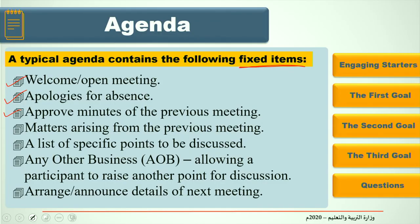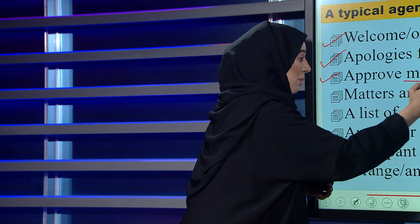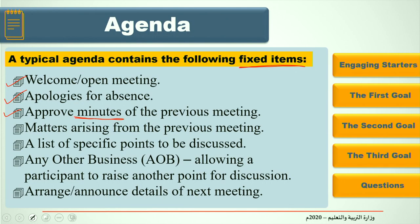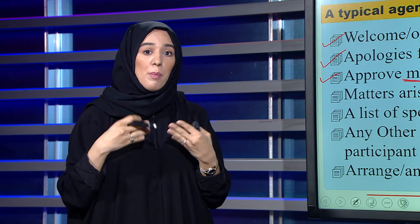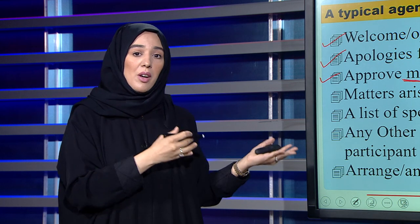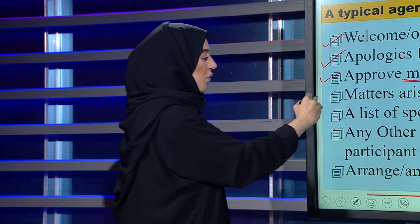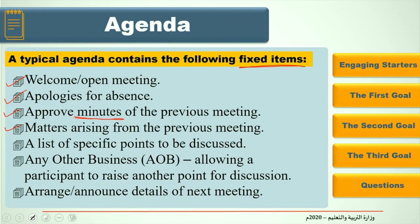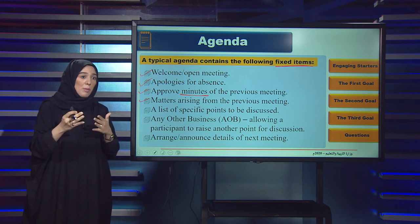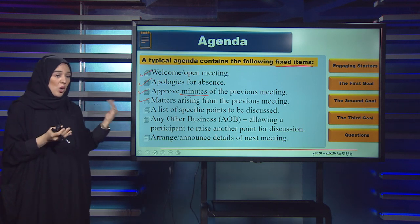Number three: approved minutes of the previous meeting. In the previous meeting, some topics were discussed, and in this meeting they get approval from all members on those discussions. Number four: matters arising from the previous meeting. Discussions from the last meeting that required action are followed up here to see what actions have been taken.